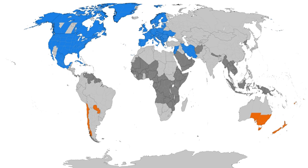The first states to adopt DST nationally were those of the German Empire and its World War I ally Austria-Hungary, commencing April 30, 1916, as a way to conserve coal during wartime. Britain, most of its allies, and many European neutrals soon followed. Russia and a few other countries waited until the next year, and the United States adopted daylight saving in 1918.